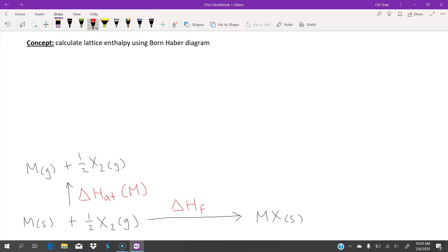Moving on, the metal will need to form a cation to be able to bond in an ionic bond with the halogen and form the salt. So we would have a metal cation as well as an electron, and that is the enthalpy of first ionization.